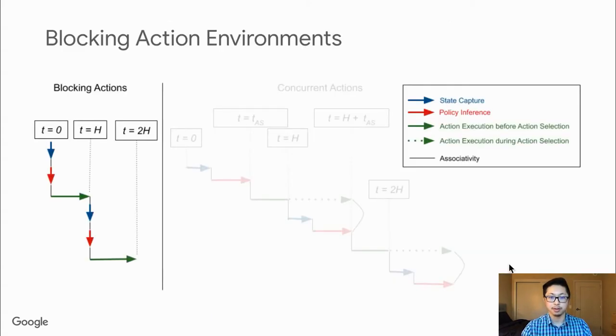In many deep reinforcement learning settings, we assume that actions are blocking. This is the environment diagram highlighted on the left. The different colored arrows represent different stages in the environment interaction cycle. The blue and red arrows represent state capture and policy inference, which are done sequentially.